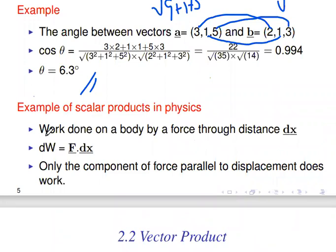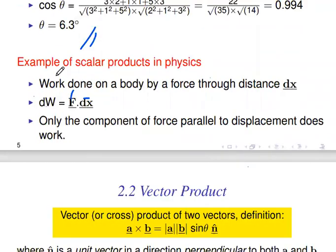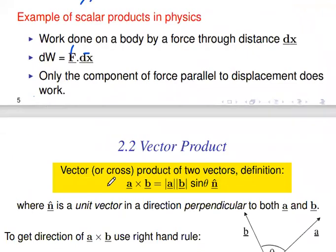If you want to find the work done on a body by a force through a displacement, you take the dot product of the force vector and the displacement vector. That gives you the work done. So the main applications of the dot product are: finding the angle between two vectors, and finding work done.